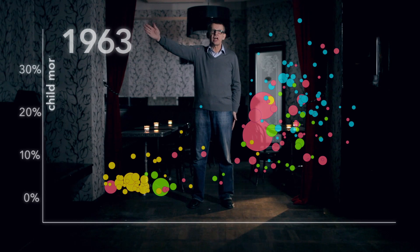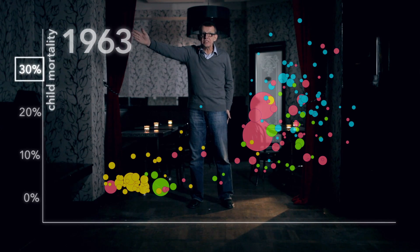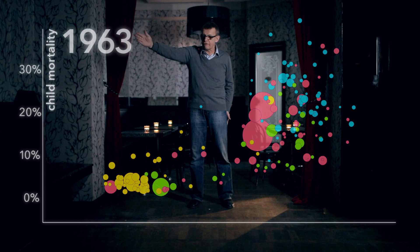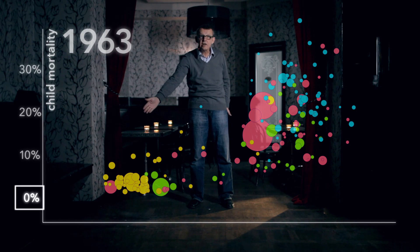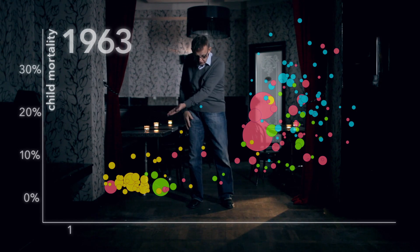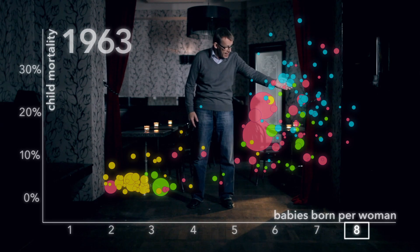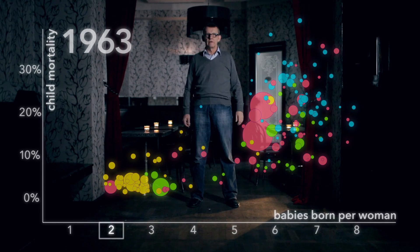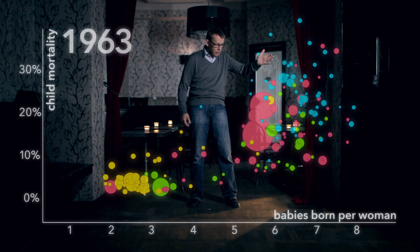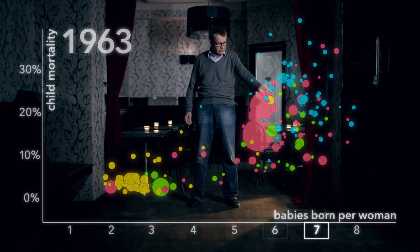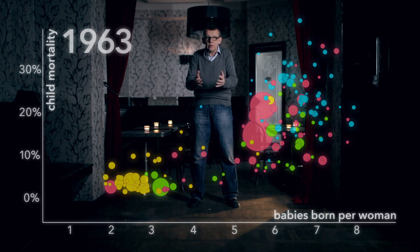Vertical is child mortality — from 30% of children dying before the age of five, down to almost zero child death. Horizontal, number of babies born per woman, from eight to less than two. But most countries were up here. Women had six to seven children. Child deaths were frequent. Almost every family lost one or more children.